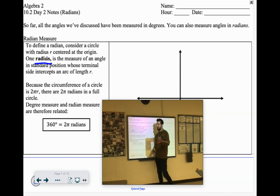Now, because the circumference of a circle, from your geometry days, the circumference formula was 2π times the radius, and we're using radian, one radian as our radius, then the circumference of a full circle would be 2π radians.